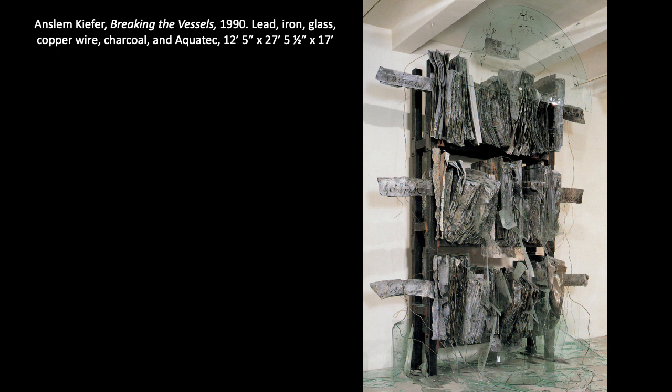In this work, Kiefer draws upon the Jewish religion and, more specifically, the Kabbalah, a collection of Jewish mystical writings. The words Ein Sof, which mean the infinite presence of God, are written on the arched piece of glass above the bookshelf. Ten lead labels are placed around and on the bookshelf, representing the ten vessels that, as described in the Kabbalah, are believed to contain the essence of God. In this way, the books represent the potential presence of God even in the midst of destruction and tragedy.